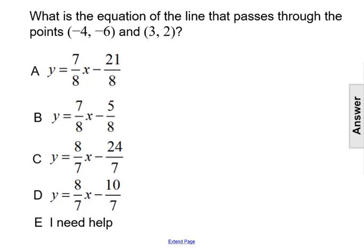What is the equation of the line that passes through the points negative 4, negative 6, and 3, 2? If you look at all our answer choices, these equations are written in slope-intercept form, in the form of y equals mx plus b, where m is the slope of the line and b is the y-intercept of the line.